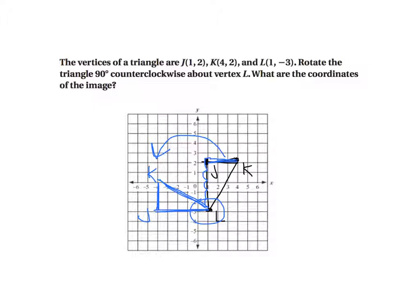Pause the movie and write the coordinates for this new triangle. Press play to check your work. Let's see how you did. J should have been (-4, -3). K should have been (-4, 0). And L should have been (1, -3), which is the same as our original. Pause the movie. Make sure you have this in your notes.